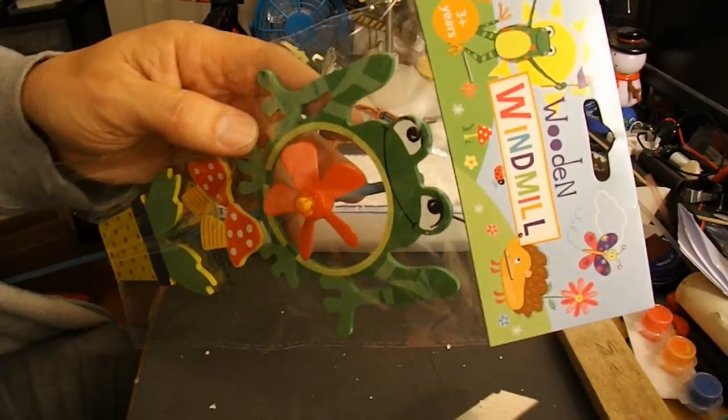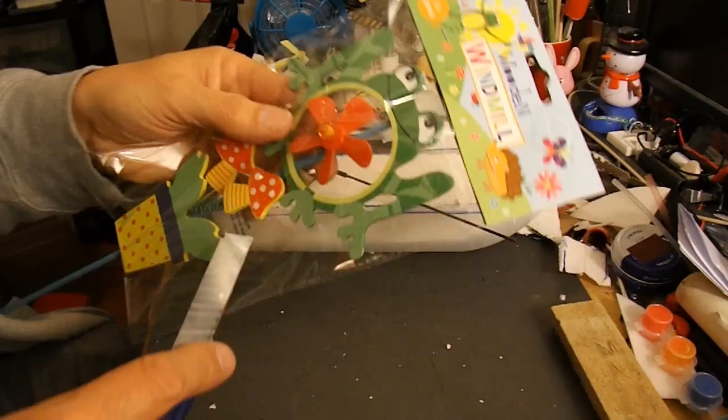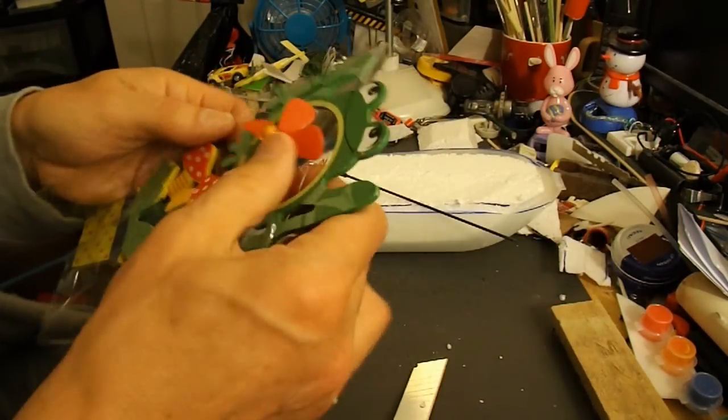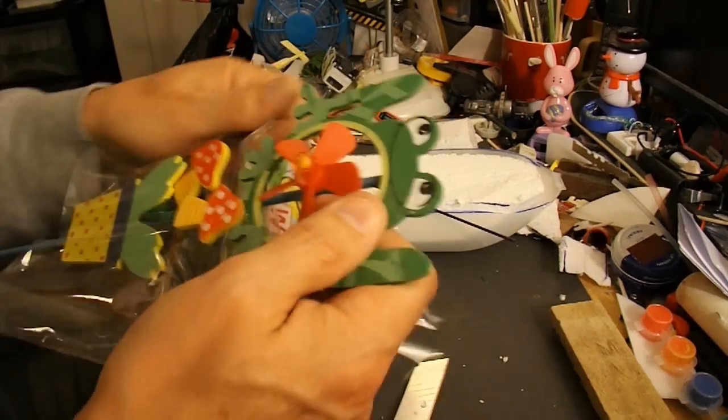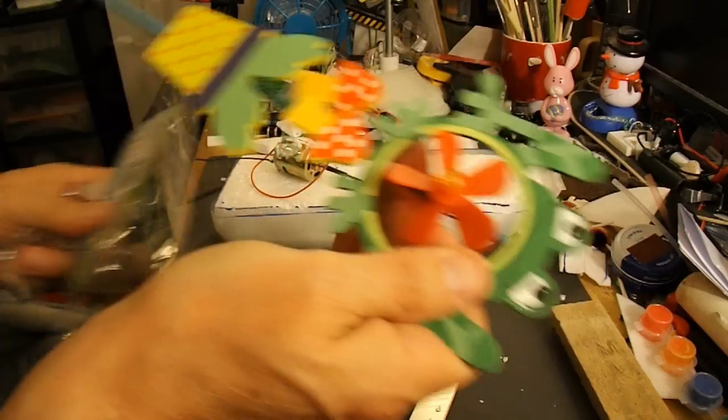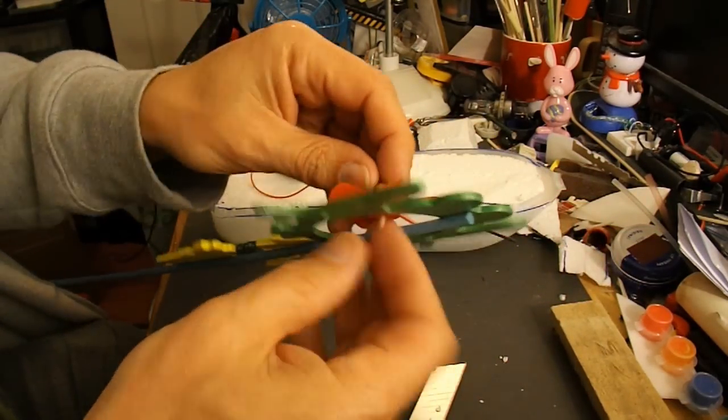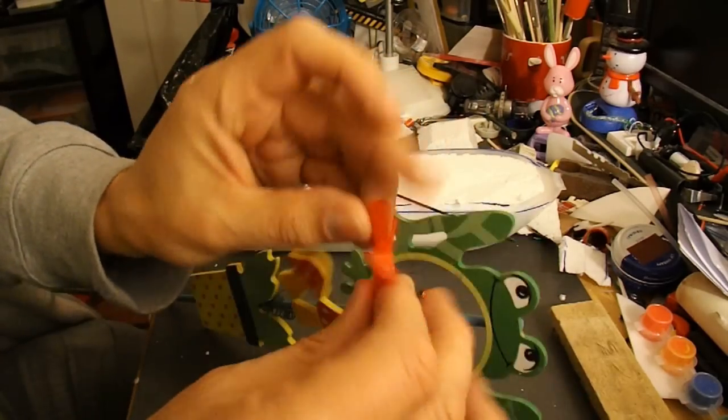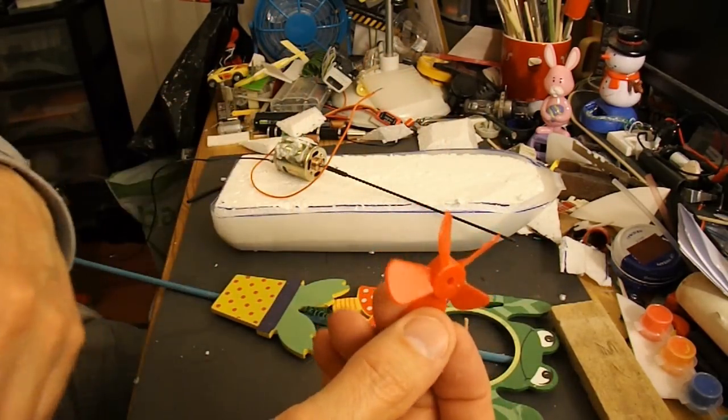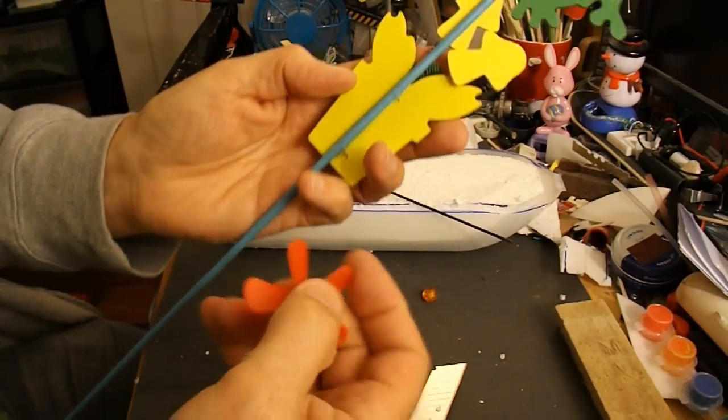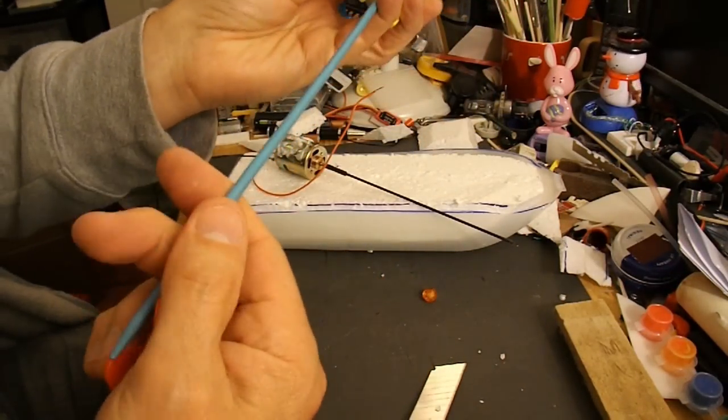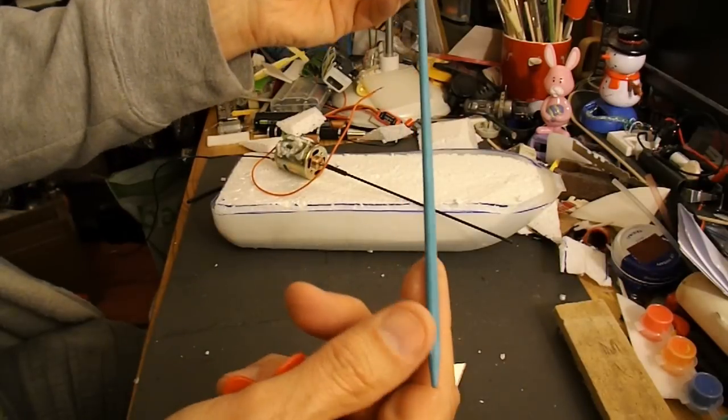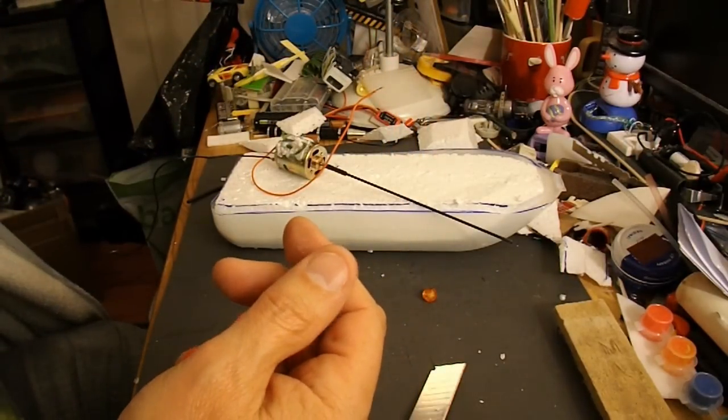Propeller from a bargain store wooden windmill. So there's our propeller. It's a handy bit of cane now, we can use that for an axle for something or other so we won't throw it away.